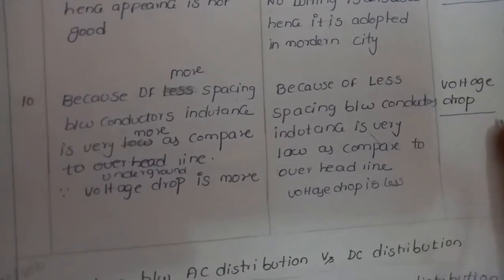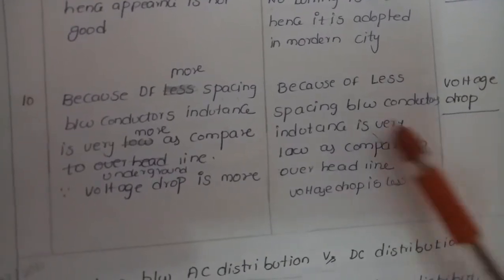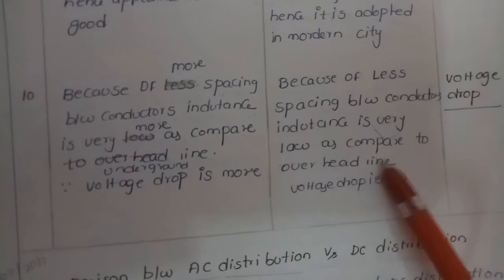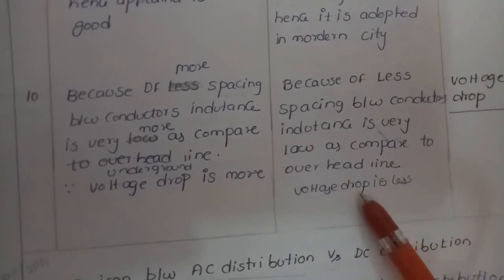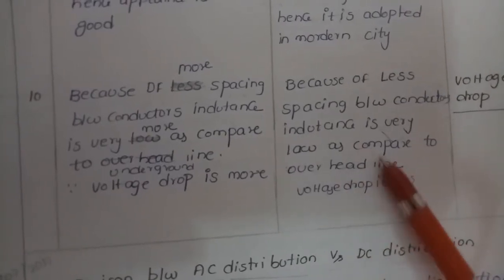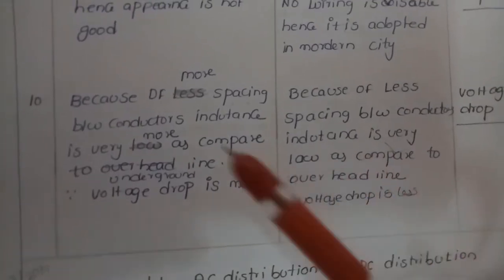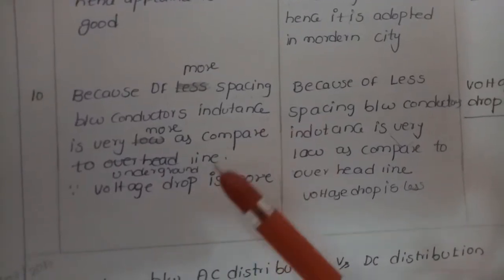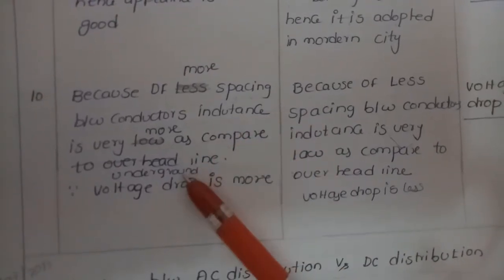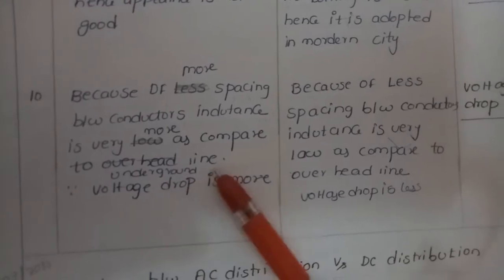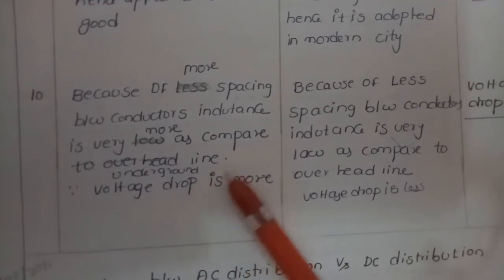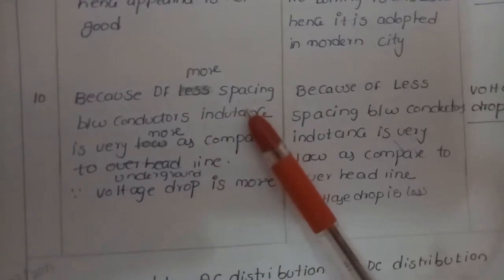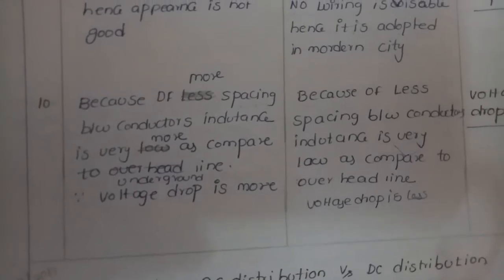Regarding voltage drop, because of less spacing between conductors, inductance is very low in underground systems compared to overhead lines, so voltage drop is less. In overhead systems, inductance is more compared to underground lines, and therefore voltage drop is more.